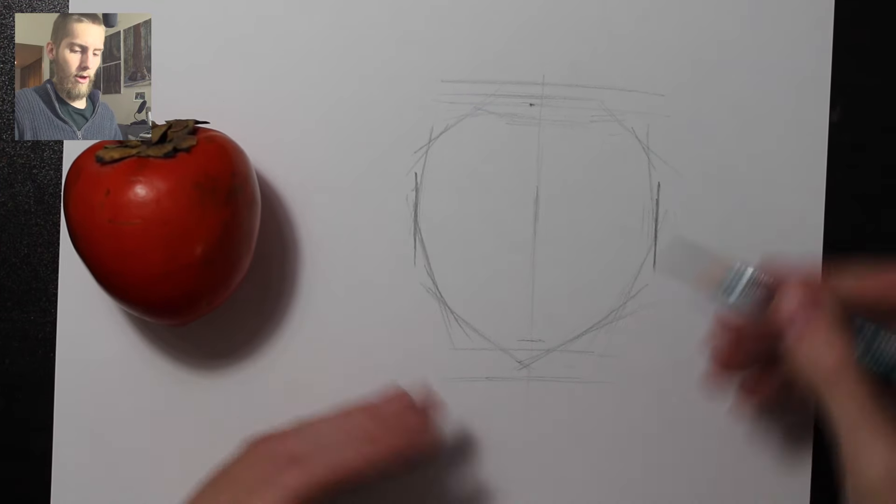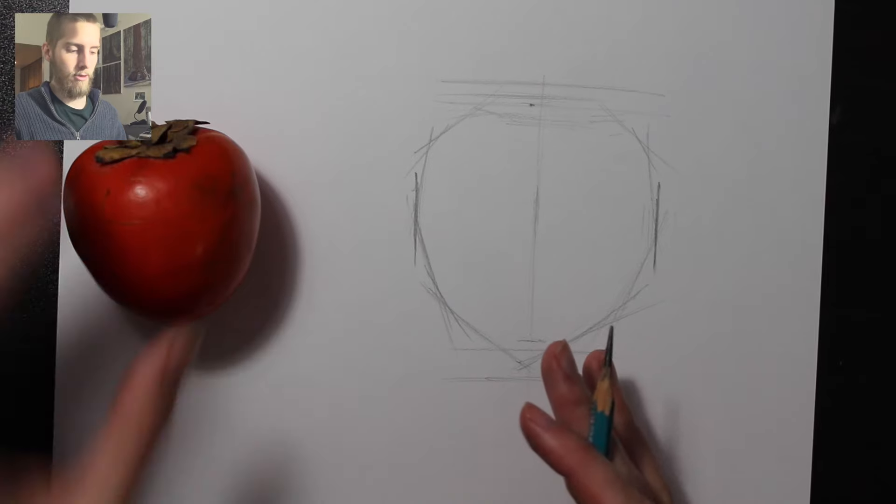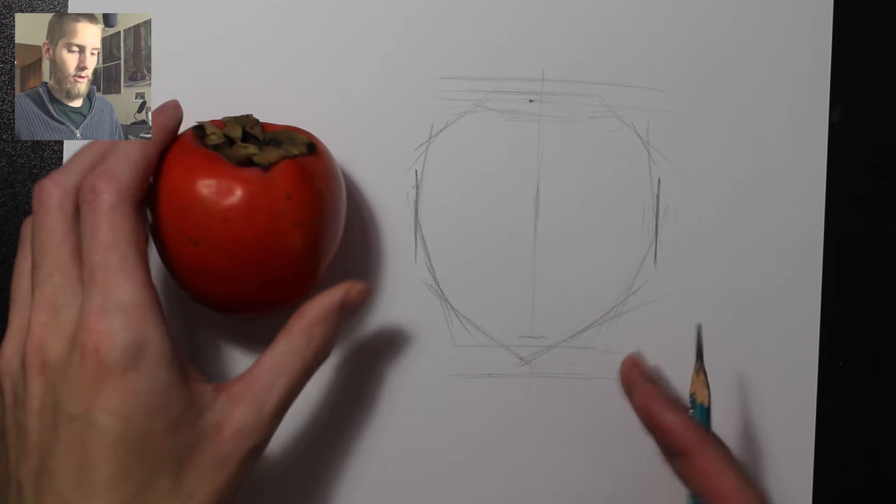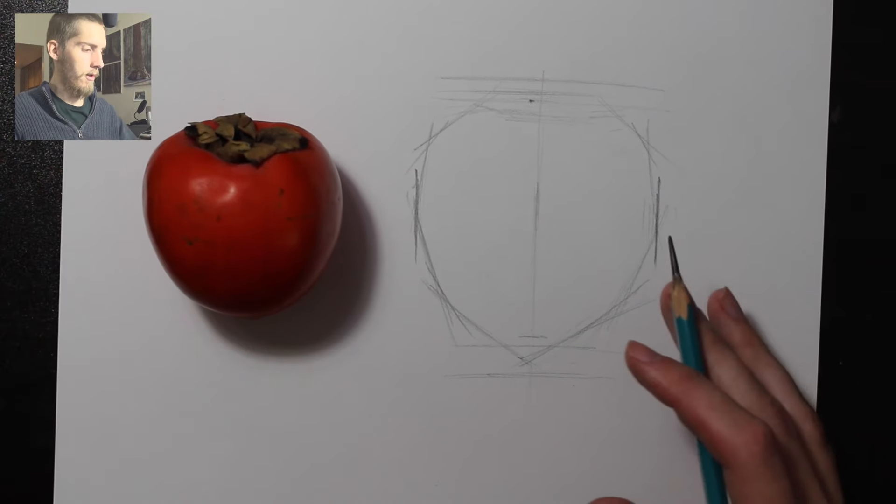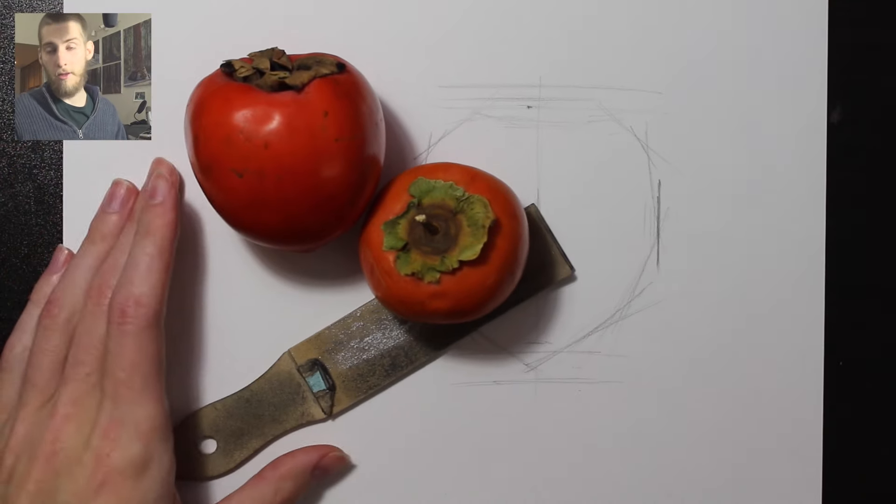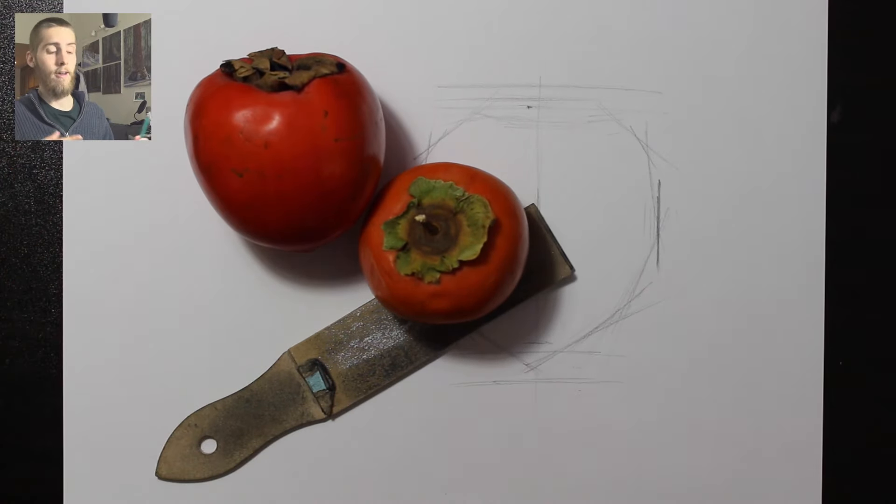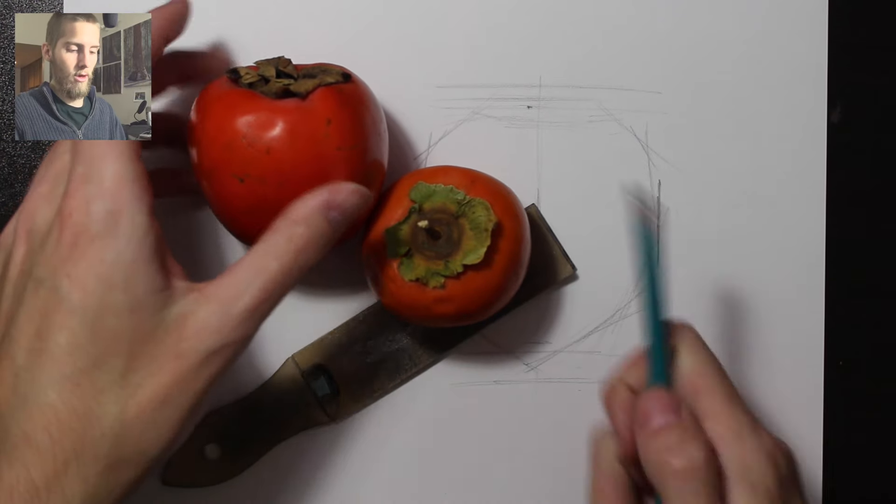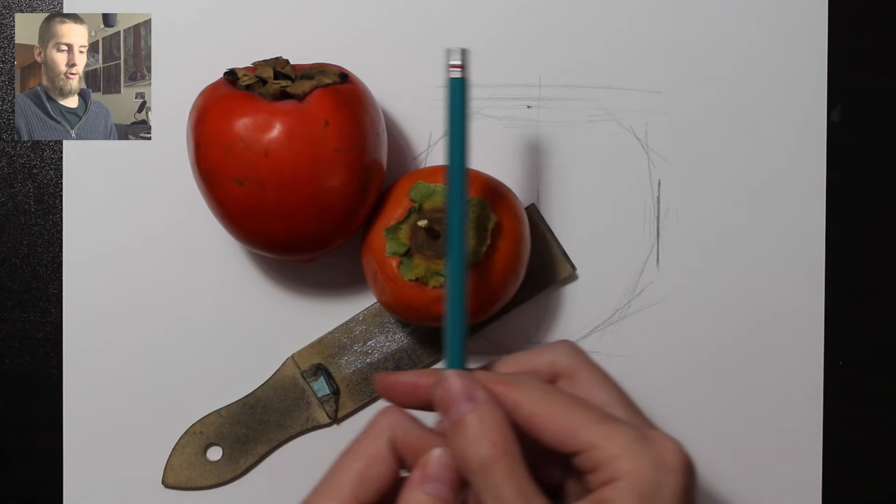Once you get used to doing this, blocking it in this way, it takes a lot of practice, even for simple objects like this. I've had a little bit of practice here. But when you start doing a grouping of objects, like a still life, or something outside like a landscape, there's trees and buildings and things, you can start using horizontal and vertical lines, straight lines, to line things up.